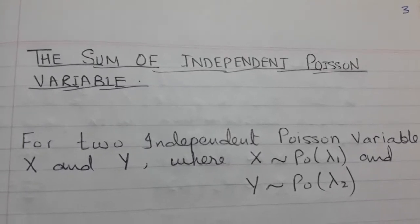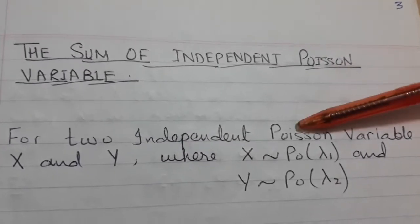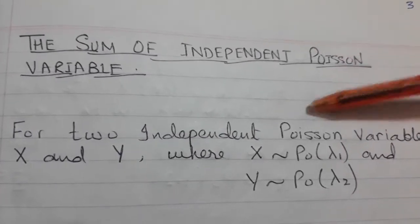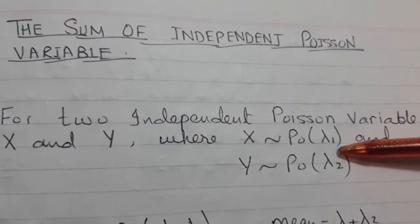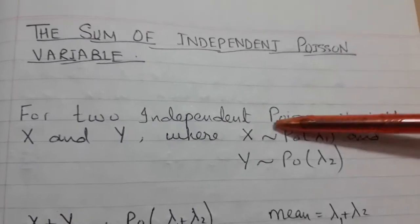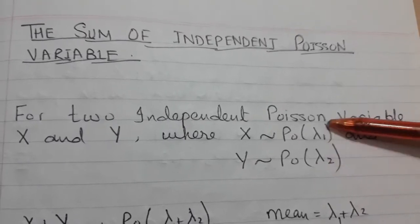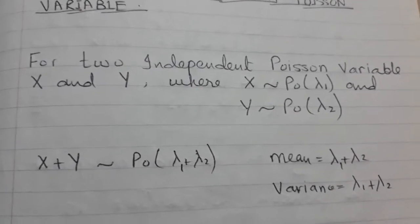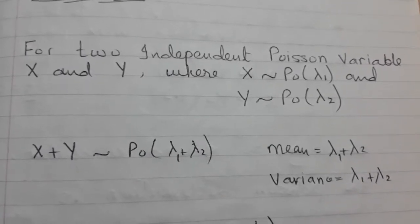The sum of independent Poisson variables: if two independent Poisson variables are given to you in a question and you have to find the probability of the sum of those two, then how do you do this? If random variables X and Y are given with parameters lambda 1 and lambda 2, you add up the lambda values to get a new value, which you then use in the question.